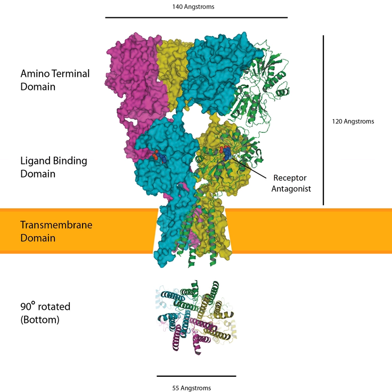In other words, although one gene (GriA1–GriA4) is encoded for each subunit (GluA1–GluA4), splicing after transcription from DNA allows some exons to be translated interchangeably, leading to several functionally different subunits from each gene. The flip-flop sequence is one such interchangeable exon.